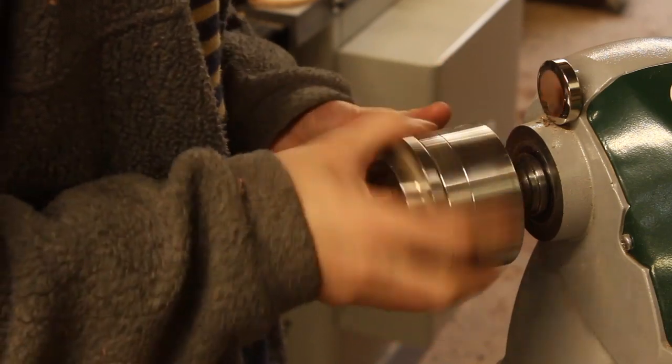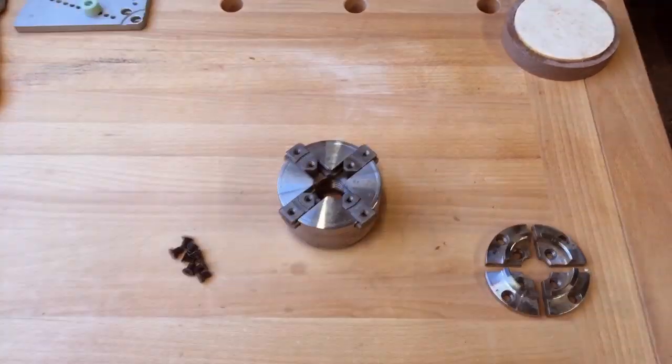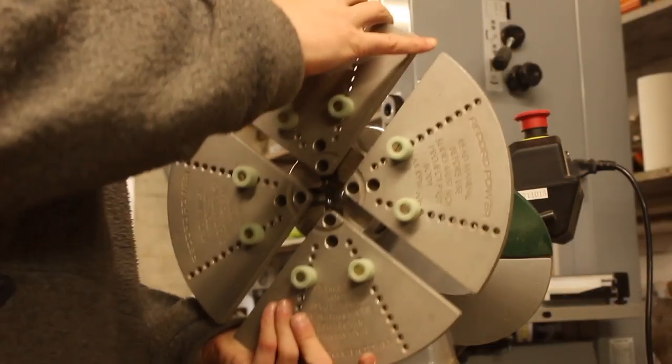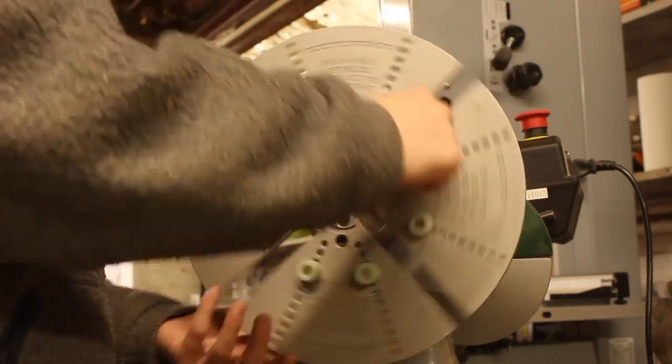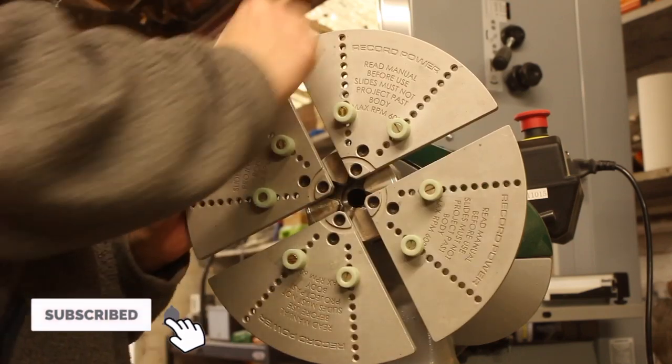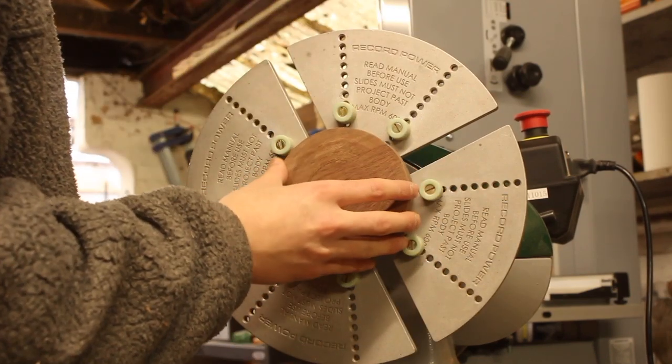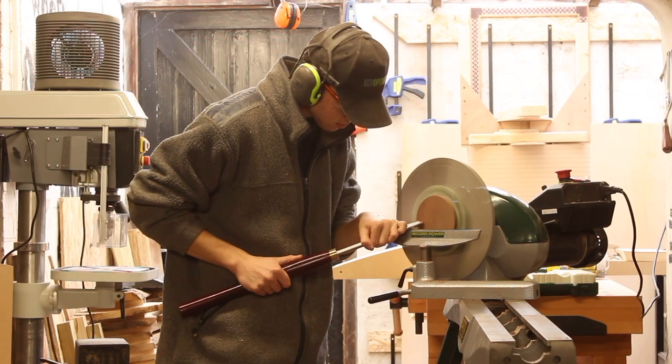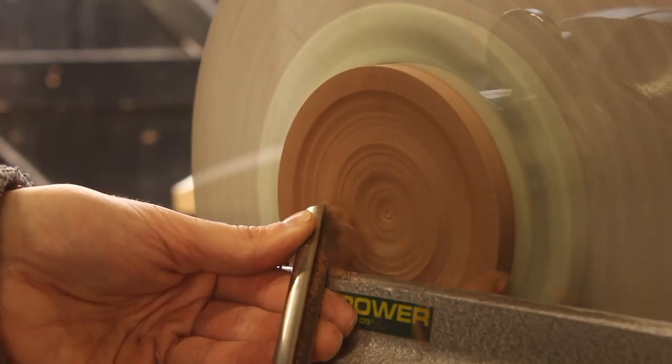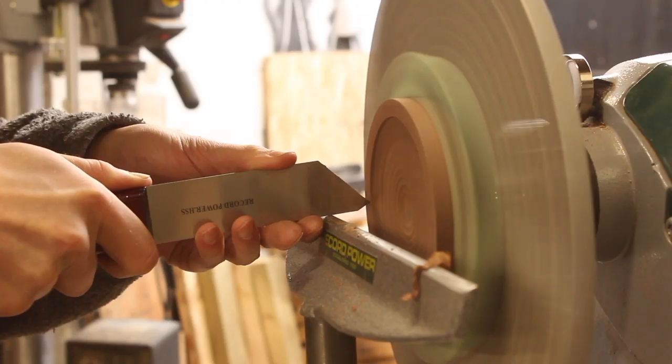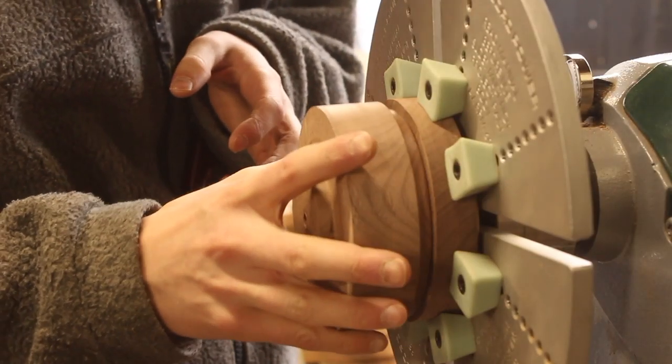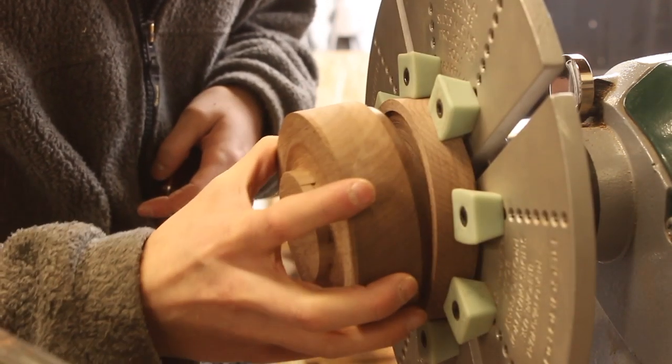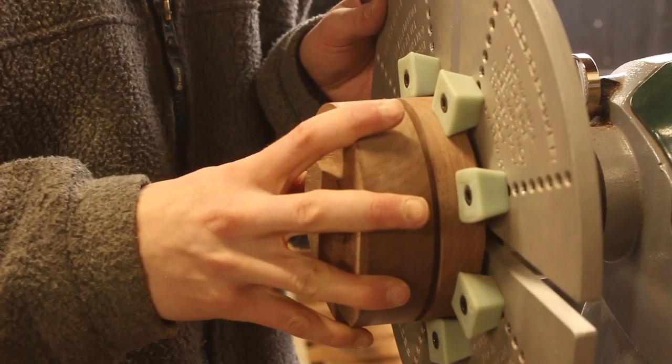Now I'm changing the chuck jaws to the remounting jaws so I can clamp the lid on the lathe without having to make a tenon or marking it, because these are soft pads which grip the outside of the lid and allow me to hollow it out without damaging it. Remounting jaws are a great product in wood turning. What I'm doing here is very carefully taking little by little off until the lid fits perfectly. As you can see there, I got a very tight join.